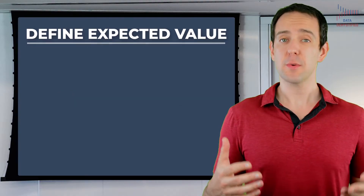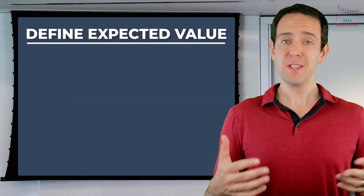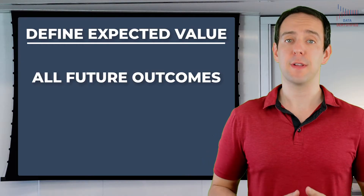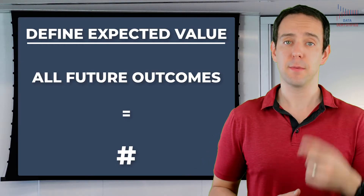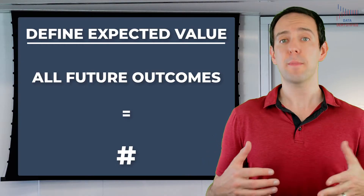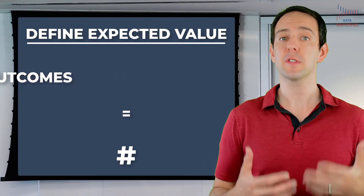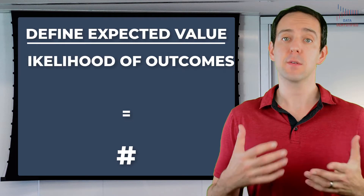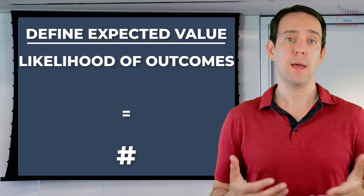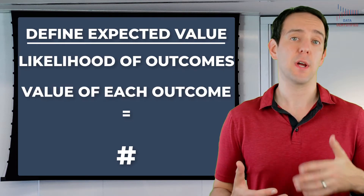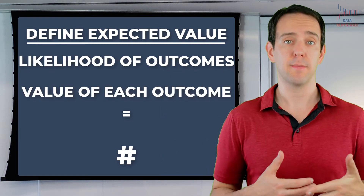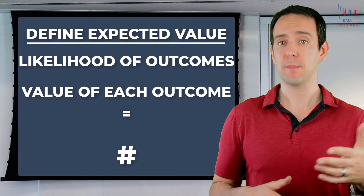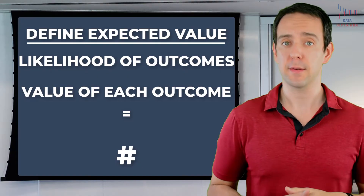So let's start with a definition. Basically, expected value is a way to think about all possible future events as a single number. We do that by considering every single reasonable outcome, how likely those outcomes are, and how much value each outcome provides, and then sum it all up. This is a lot easier to explain with an example, so let's do that.